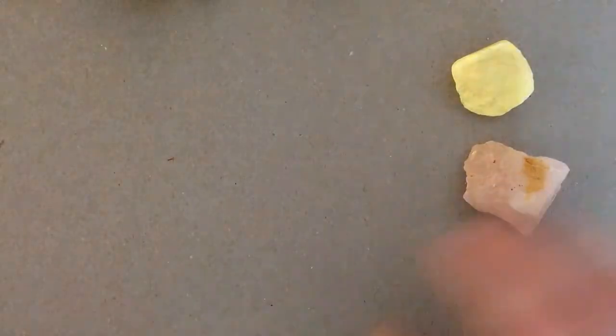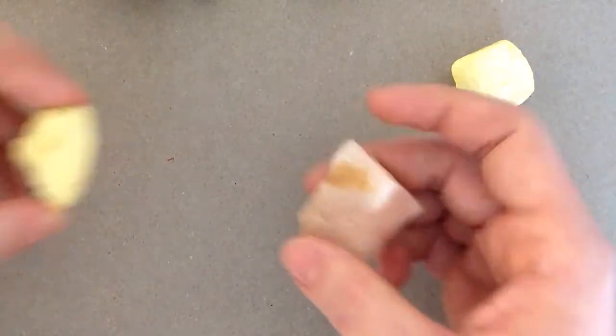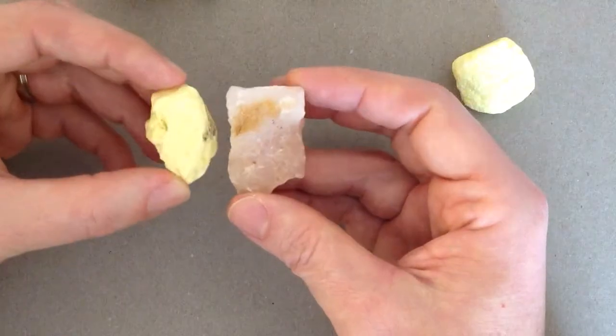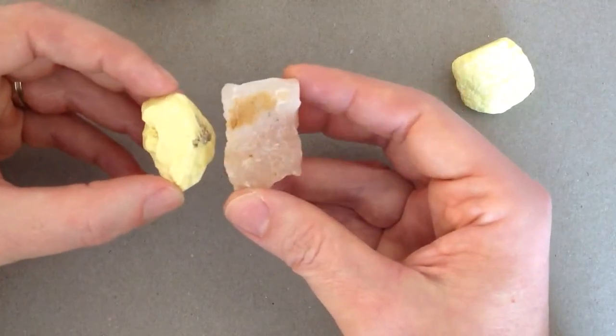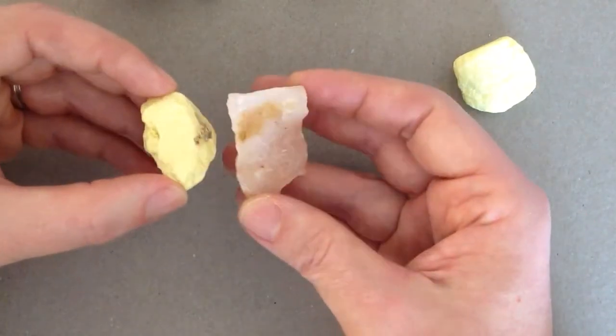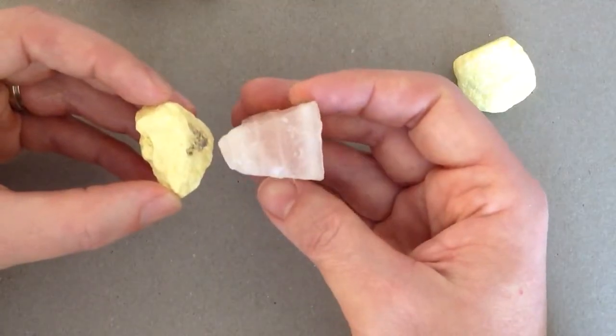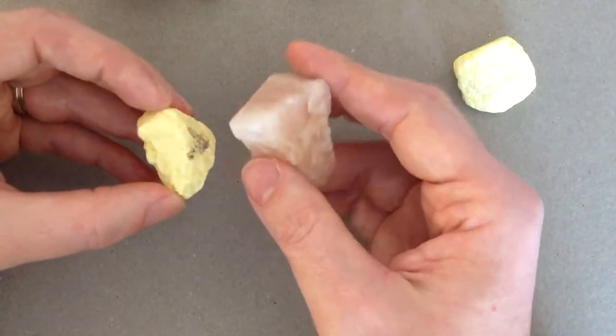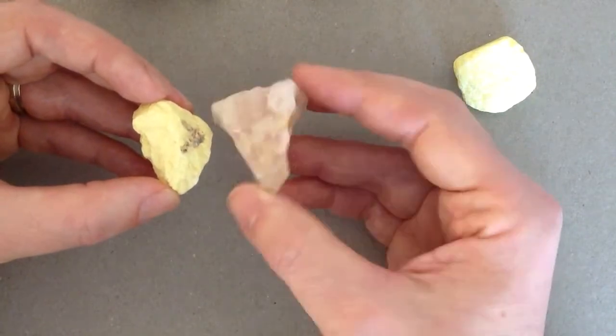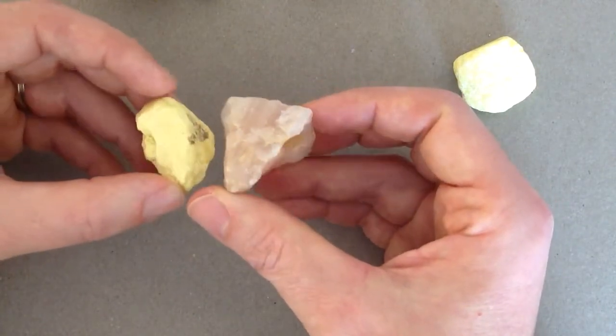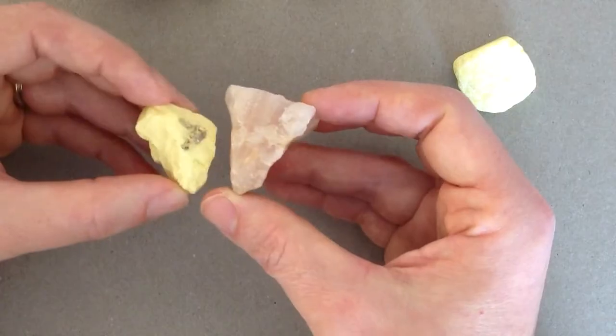The other luster that we have is non-metallic. Non-metallic does not look like metal. You got to be careful because you can have a shiny luster and it could be non-metallic. So for instance, a mineral like quartz that's in my right hand, that is a relatively shiny surface, but it does not look like metal.